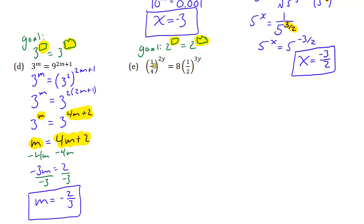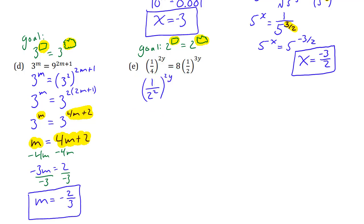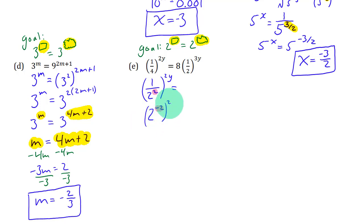So 1 fourth first of all — the 4 is 2 to the power 2. I'm going to write 1 over 2 squared as 2 to the power negative 2. That's what the negative exponent does. You have that to the power 2y, and you can combine those because a power to a power means you multiply: negative 2 times 2y is negative 4y.